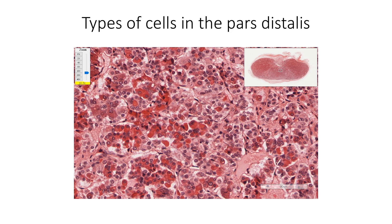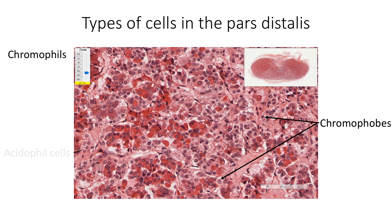Based on their staining character, cells in the pars distalis are classified as chromophobes and chromophils. Chromophils are further classified as acidophils, taking eosin stain, and basophils, taking hematoxylin stain. About 40% of the cells are acidophils, 10% are basophils, and the remaining 50% are chromophobe cells.